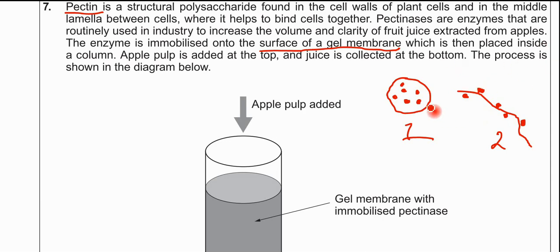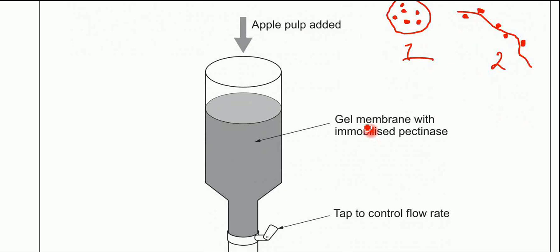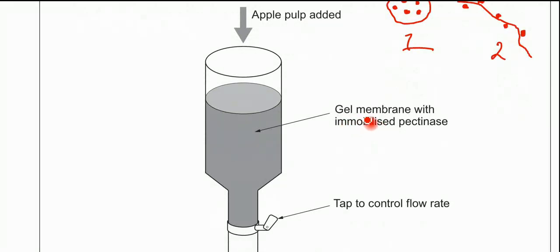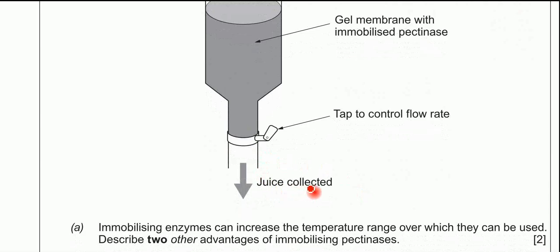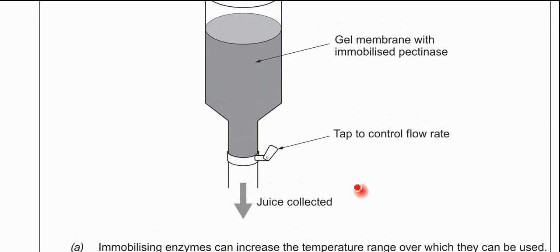The immobilized enzymes are added to a column, which is there. You've got the gel membrane immobilized with pectinase. You've got apple pulp going in, and then down the bottom you've got the juice coming out. As the apple pulp goes through this immobilized region, the pectinases will start to digest the pectin, and that allows the cells to sort of break apart and detach from each other.